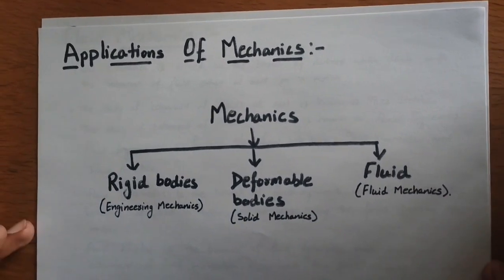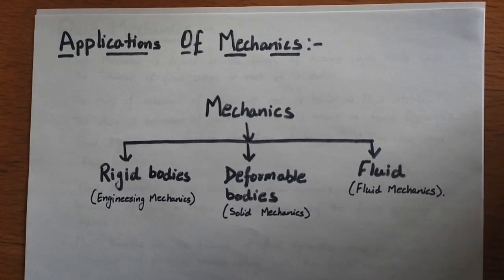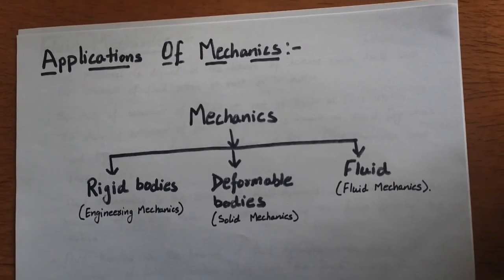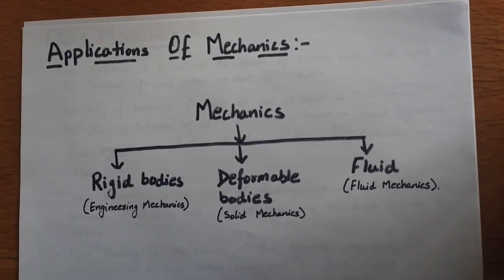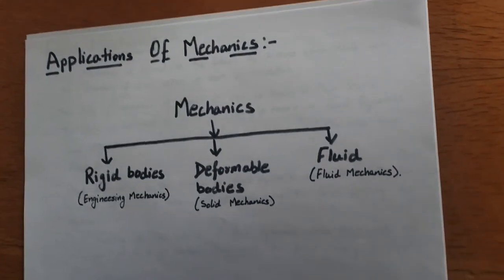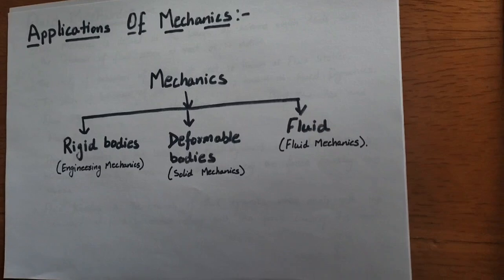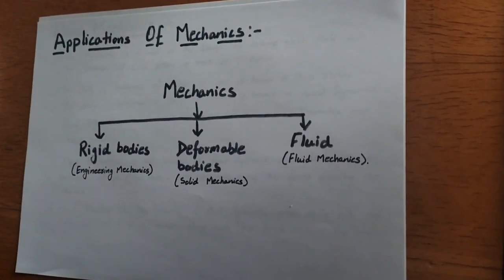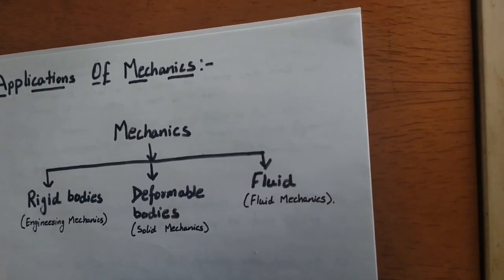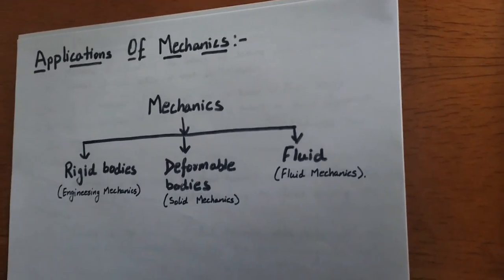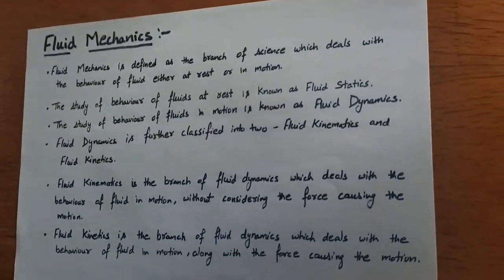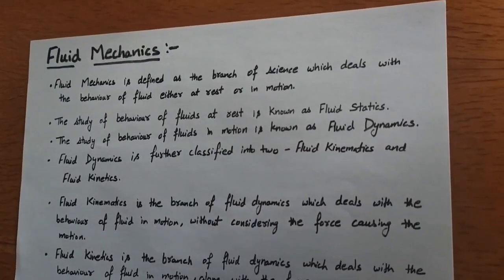Regarding the applications of mechanics: when we apply the laws of mechanics to rigid bodies, that is known as engineering mechanics. When we apply it to deformable bodies, that is solid mechanics — we also have a subject of solid mechanics in our engineering. When we apply its laws to fluid, that is known as fluid mechanics. Now let's see what fluid mechanics is when we combine these two terms together.